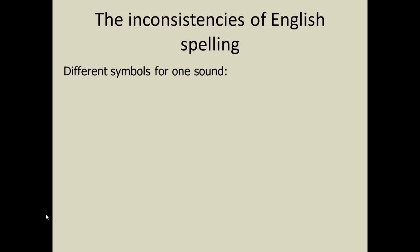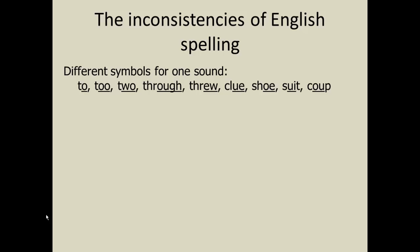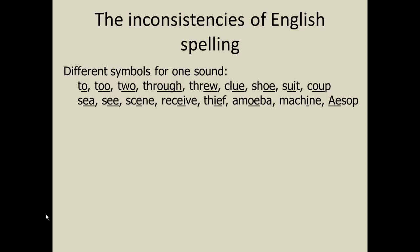We have different symbols for a single sound: two, through, clue, shoe, suit, coo — all different symbols, same sound. Similarly: see, seen, receive, thief, amoeba, machine, Aesop — again, all different symbols representing the same sound.